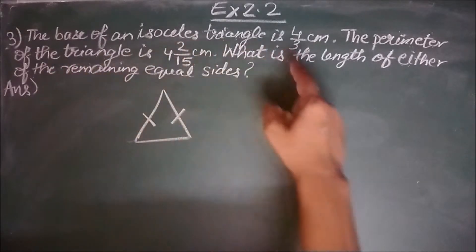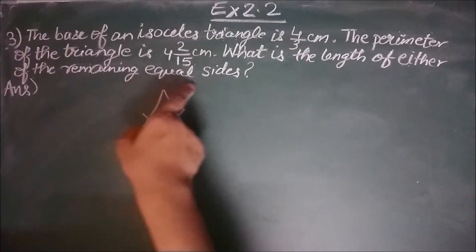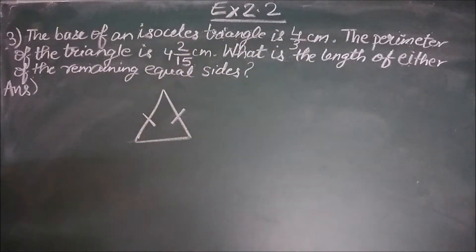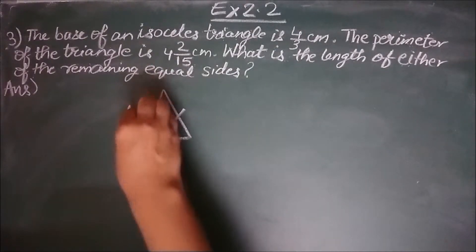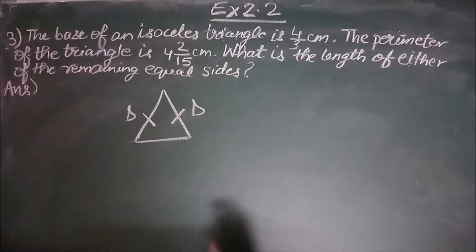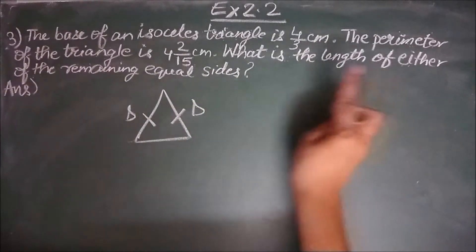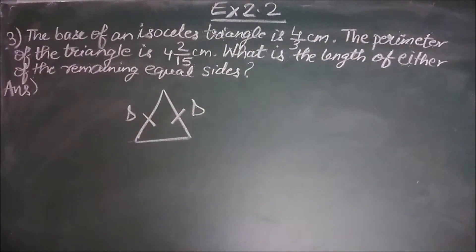Now they have asked what is the length of either of the remaining equal sides. So we have two equal sides. Let us call them S. So they were asked the length of it. What is the length of it? So we have assumed it is S.